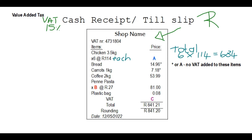Then we have coffee, and then pasta. It says times B at R27 each, and the total is R81.